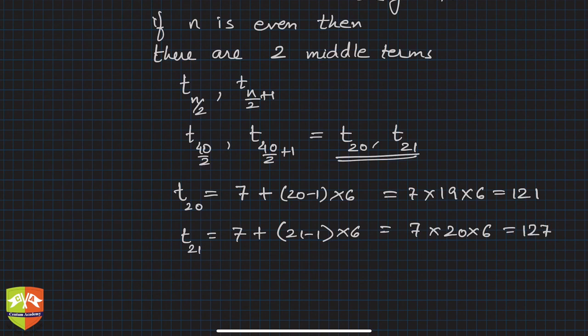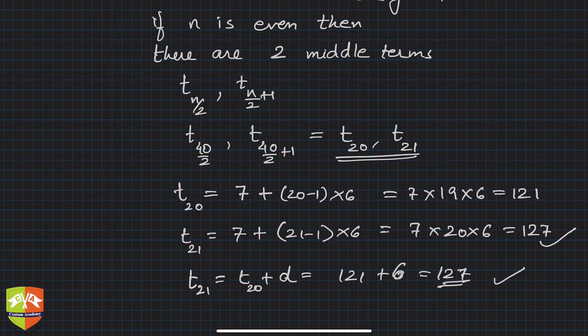You could have found out t 21 simply by this as well. t 21 is t 20 plus the common difference. t 20 was 121 plus d was 6, so hence it is 127. Whichever way, either this way or that way, you can figure out. And hence we got two middle terms, 121 and 127 are the middle terms of this AP.